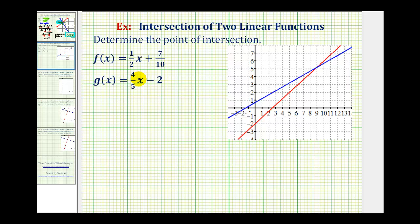To determine the point of intersection of these two linear functions, we want to determine when f(x) is equal to g(x). This will occur when 1/2 x plus 7/10 is equal to 4/5 x minus 2. So we'll set this up as an equation and solve for x, which will give us the x-coordinate of the point of intersection, and then we'll use one of the functions to determine the corresponding y-coordinate.